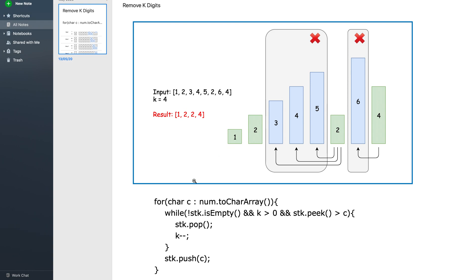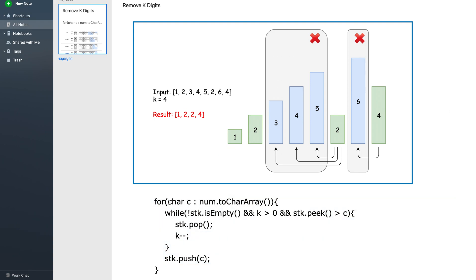So this is what we have written in this code — we are iterating over the string, checking whether the stack is not empty, k is positive, and the peak is greater than the current element. We remove the peak and decrement k, and this is under a while loop. Finally, after the while loop we simply put the current character onto the stack.